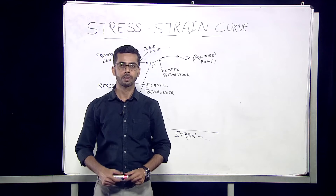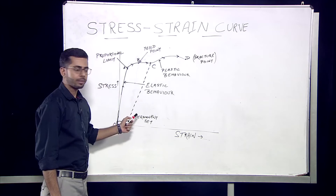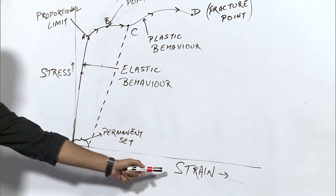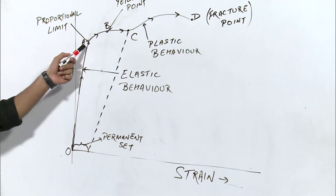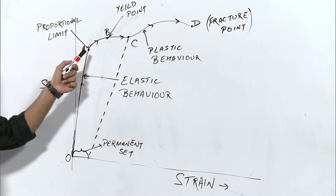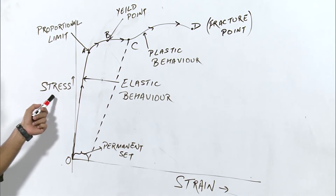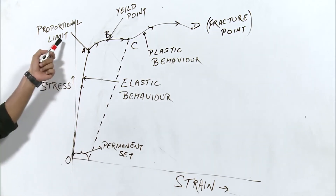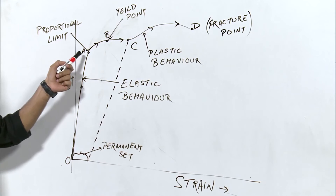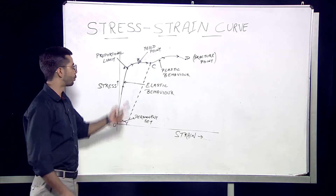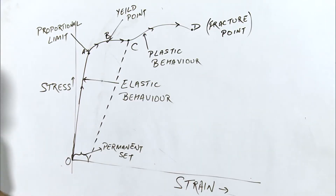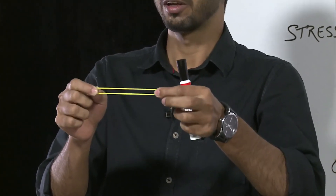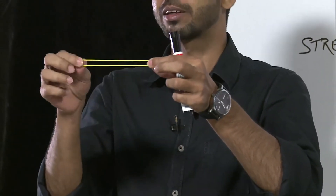Now we will discuss the stress-strain curve. We have already plotted a two-dimensional curve with stress on the y-axis and strain on the x-axis. Point A is defined as the proportional limit. The proportional limit means that if we apply stress up to a certain limit, the behavior remains proportional. Until this point, if the deforming forces are removed, the object will return to its original configuration. For example, if we stretch a rubber band within the proportionality limit and then remove the force, it will return to its original shape.